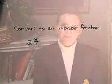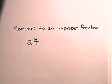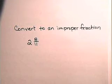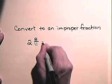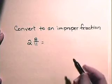Now let's look at some exercises of converting fractions. Here we have a mixed number. A mixed number is the sum of a fraction and a whole number, and we wish to convert this mixed number to an improper fraction. We have two and eight-elevenths.